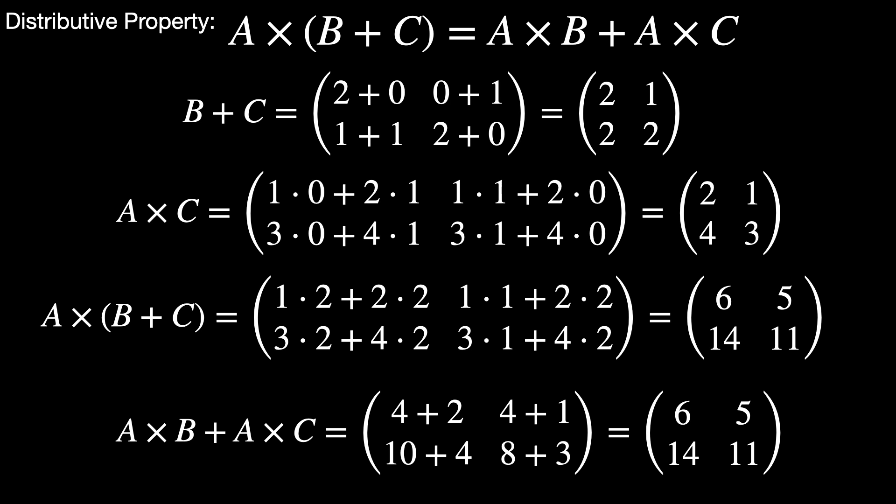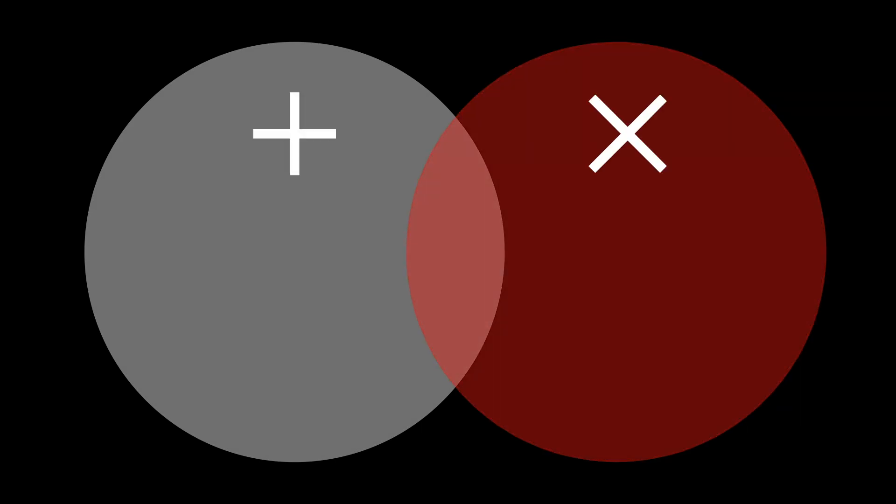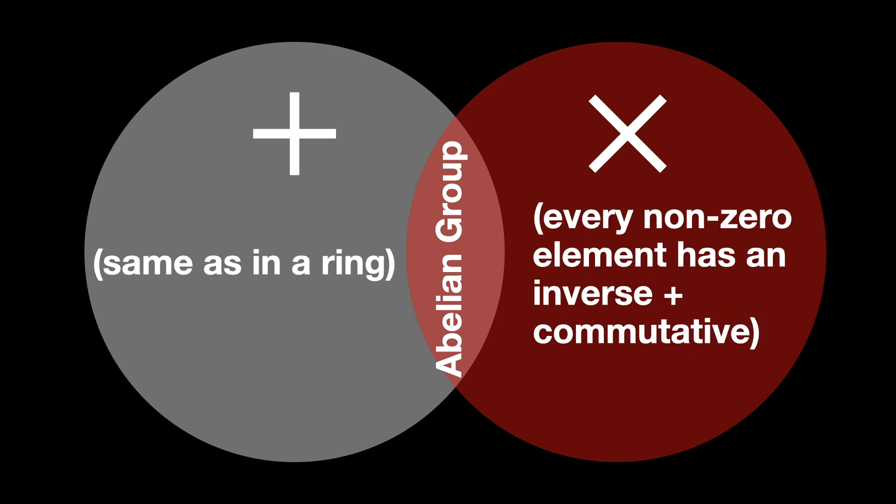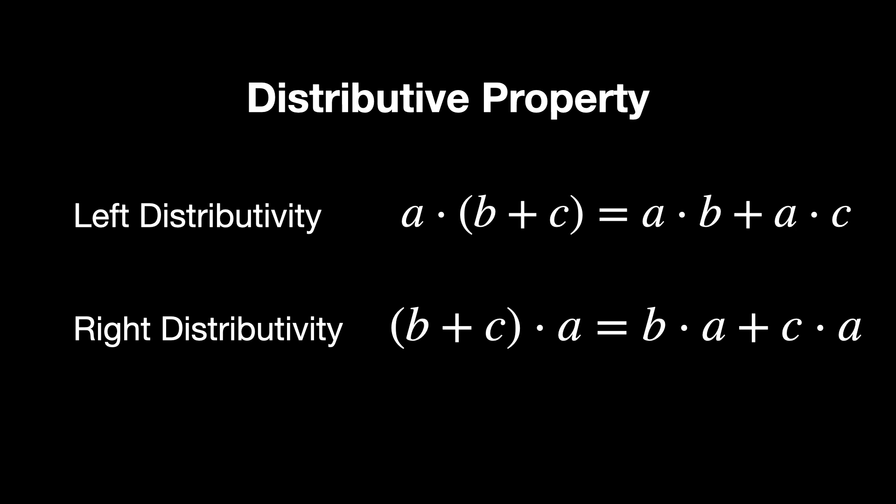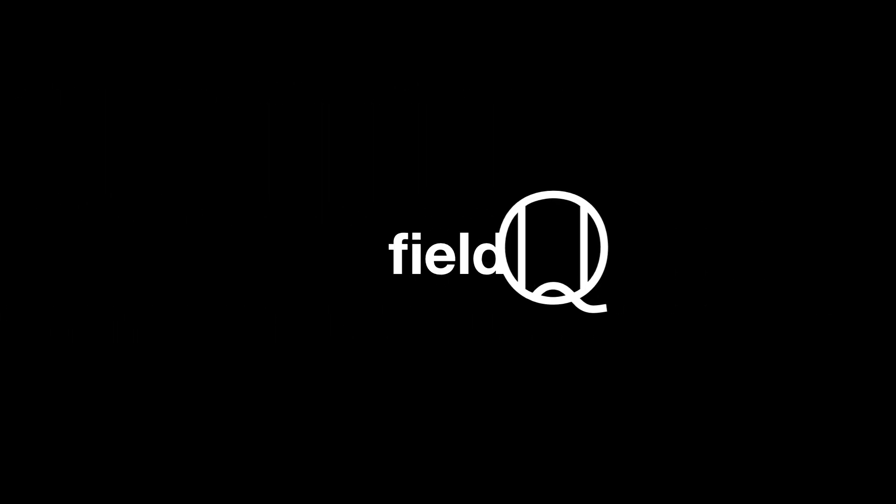A field builds on a concept of a ring by requiring that multiplication, except by zero, also forms an abelian group. Fields are sets equipped with two operations, addition and multiplication, that abide by several rules. Both operations form abelian groups. For addition, it's the same as in a ring. For multiplication, every non-zero element has an inverse, and multiplication is commutative, distributive properties, just as they were described in rings, left distributivity, and right distributivity. The set of rational numbers is a standard example of a field. Every non-zero element has a multiplicative inverse. For example, the inverse of 2 is ½. And the operations of addition and multiplication are both commutative and associative.